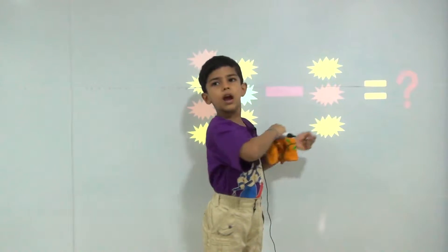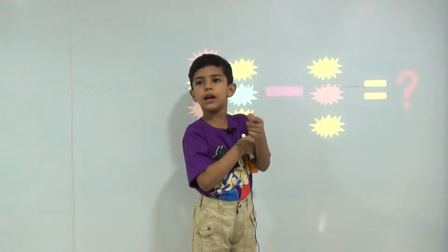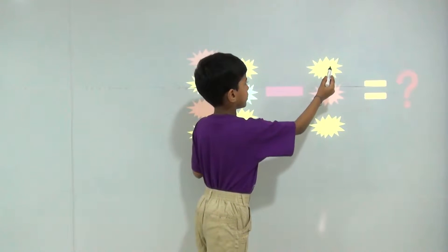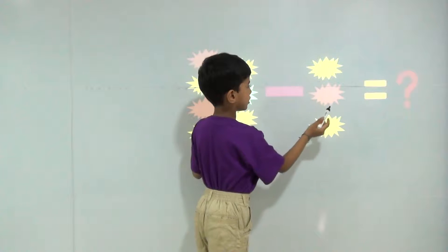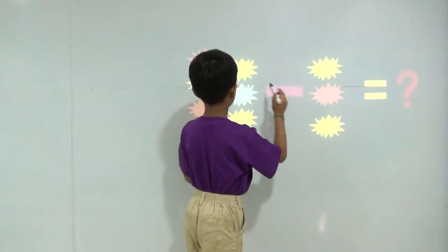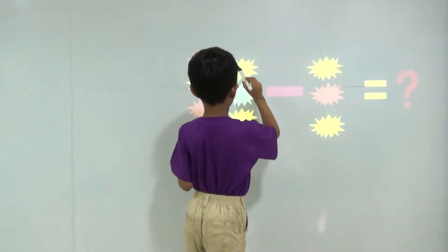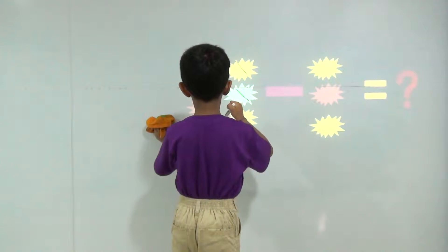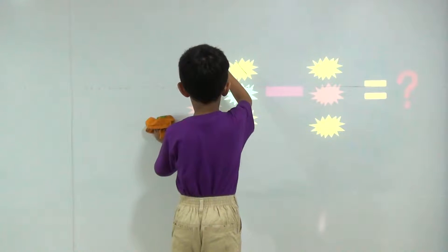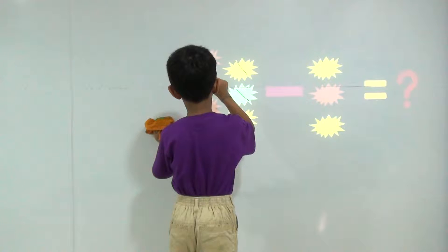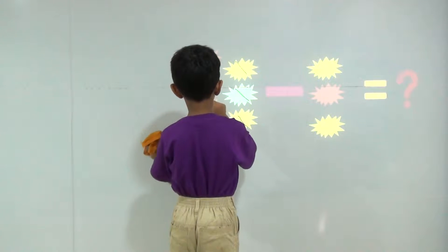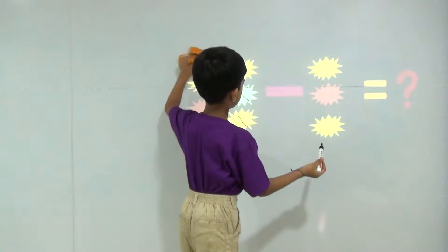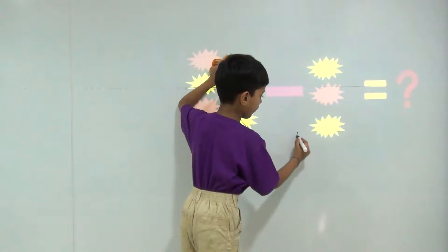I have three. Here is three. I cancelled three things. So how many things are here? Let's count. One, two, three, four. So the answer will be four.